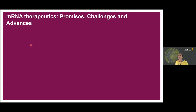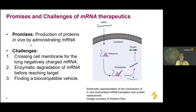I'm going to start with mRNA therapeutics — promises, challenges, and advances. All of you are probably aware that mRNA therapeutics are very popular at the moment. The promise is that we can produce proteins in vivo by administering mRNA. This approach is preferred when administering the protein itself is not viable — because the proteins degrade, don't reach the target, or won't have the right function. So we prefer to administer the mRNA to produce the proteins in vivo.